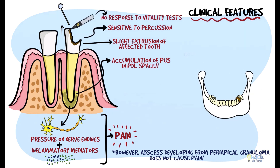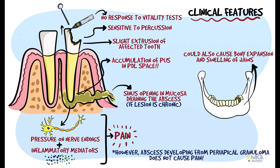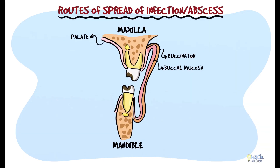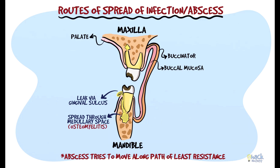Periapical abscess could cause expansion of the bone leading to a visible swelling, and at times there may also be a sinus opening established in the gingival mucosa draining the periapical abscess. If left untreated, the accumulating purulent material tries to penetrate and move through a path of least resistance. The pus may move through different paths causing varying clinical manifestations — it could move through the periodontium and leak through the gingival sulcus, or may spread through the medullary spaces causing osteomyelitis. The abscess may penetrate the buccal cortex and periosteum and leak into the mucosa via a sinus tract.